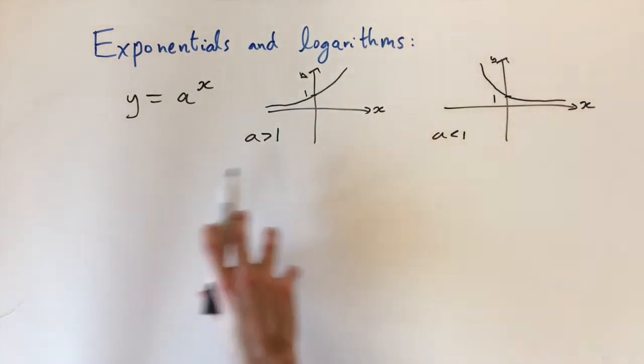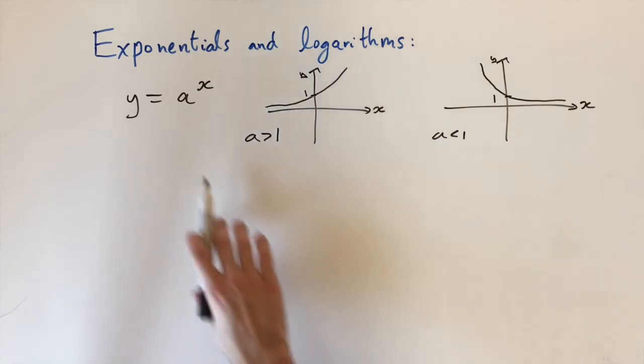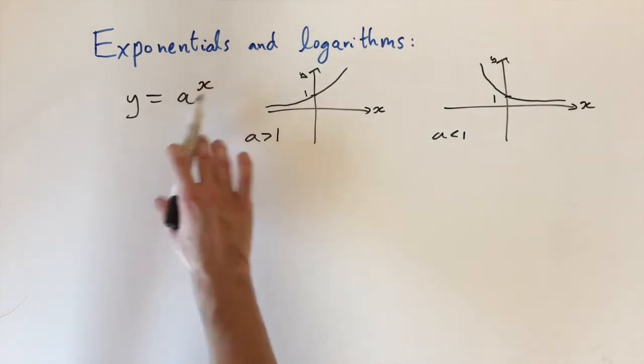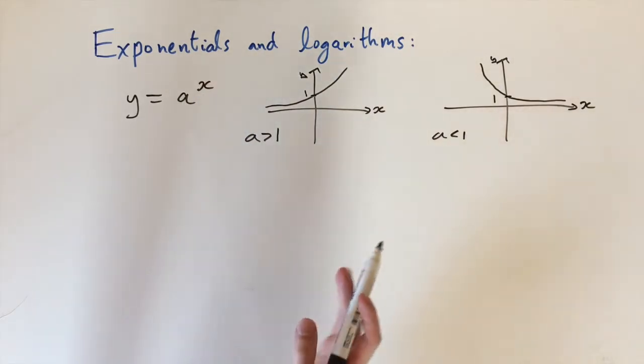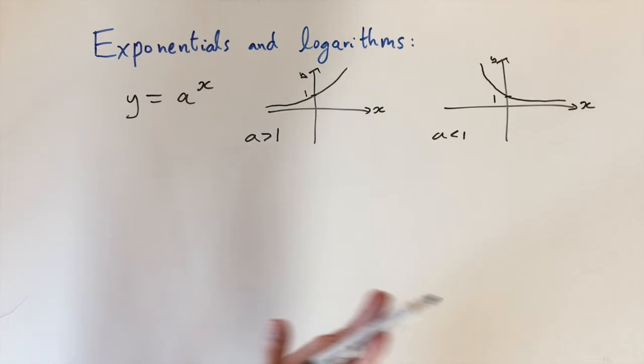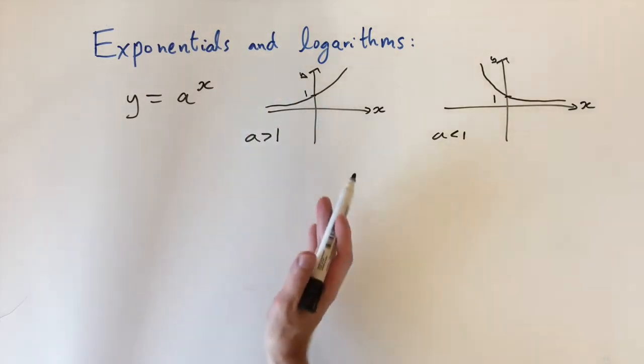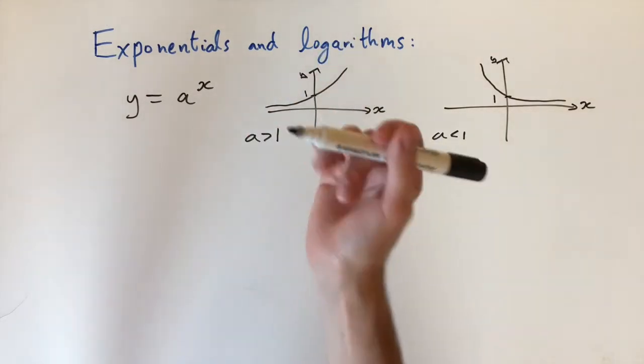This is what the exponential function looks like, and depending on the base a, this function will grow really quickly or a bit slower. If a is really big then it becomes a bit steeper.